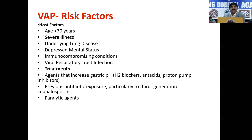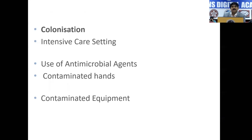Risk factors include elderly people over 70 years, severe illness, underlying lung disease like COPD or interstitial lung disease, depressed mental status, immunocompromising conditions like HIV, immunomodulate drugs, viral respiratory tract infection, chemotherapy, H2 blockers, previous exposure to antibiotics, or paralytic agents. VAP happens because of colonization, intensive care settings, use of antimicrobial agents, contaminated hands and equipment. Factors that facilitate aspiration to the lower respiratory tract include long-term mechanical ventilation, tracheostomy, nasogastric tube, or supine positioning.